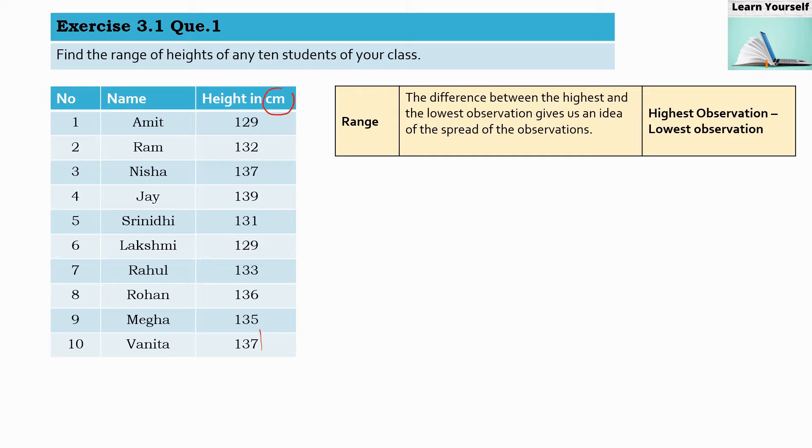Now we have to find out the range for this data. So what is the range? The difference between the highest and lowest observation gives us an idea of the spread of observations. That means, what are the two extremes of the observation? That will give us range.